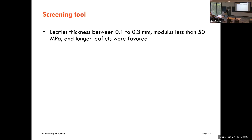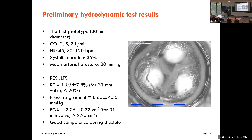From this screening study we determined that we need a leaflet thickness of up to about 0.3 mm, a Young's modulus of less than 50 MPa, and that longer leaflets are favored over shorter ones. However, there is a limit — leaflets that are too long produce unwanted twisting motion during the transition between closed and open positions.